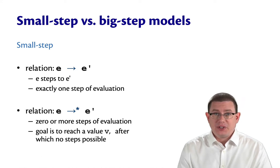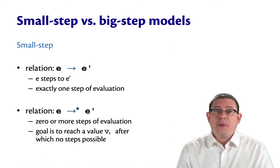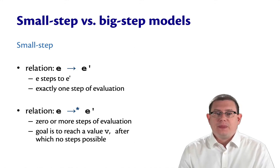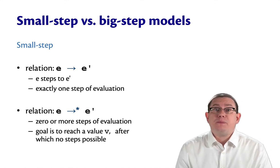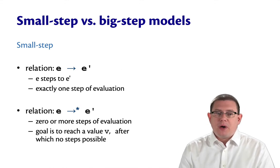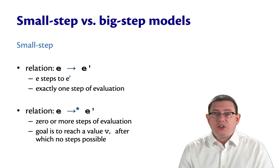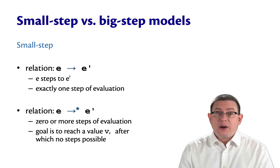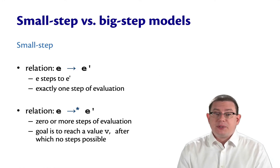We've had a lot of evaluation relations now, a lot of models. Let's review so we can keep them straight. We've had small versus big step models of evaluation. In the small step model, we had an evaluation relation for taking single steps of execution. That was written with a right arrow. E right arrow E prime meant that E steps to E prime, taking exactly one step of evaluation, no more, no less.